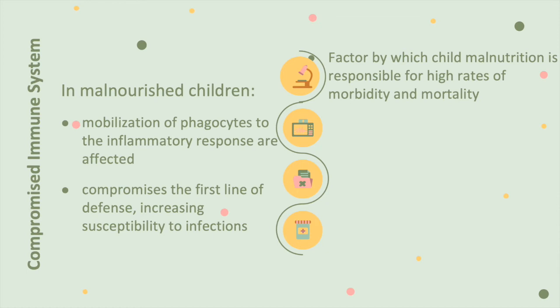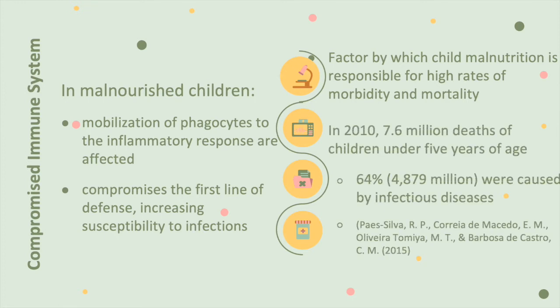In malnourished children, the mobilization of phagocytes in the immune response is affected. This significantly compromises the first line of defense, which increases susceptibility to infections. Malnourished children have a very weak immune system — it is actually one of the greatest factors responsible for the highest rates of morbidity and mortality. Just in 2010, there were 7.6 million deaths of children under five years of age, and 64% of those were caused by infectious disease.